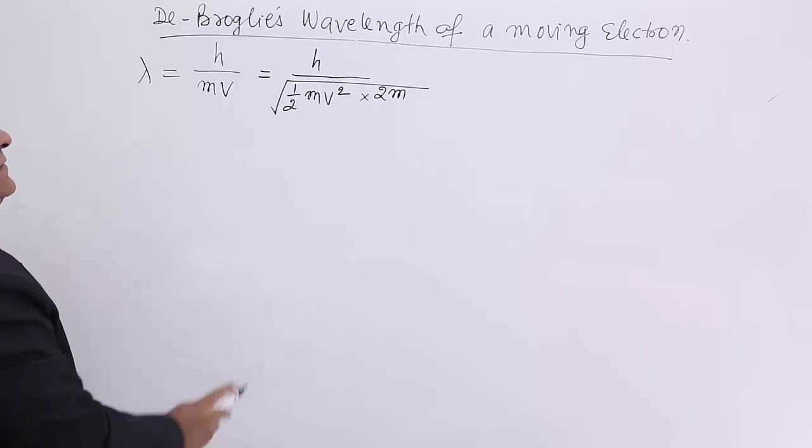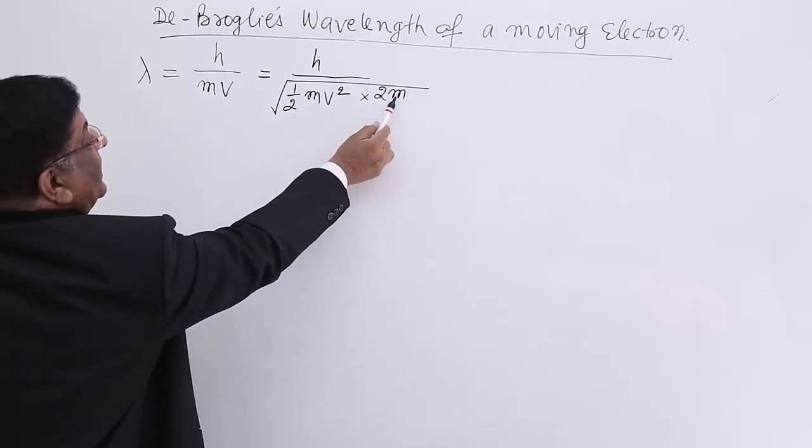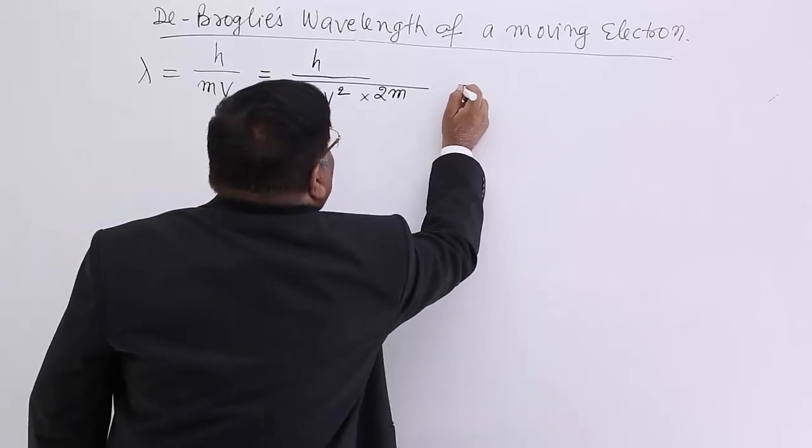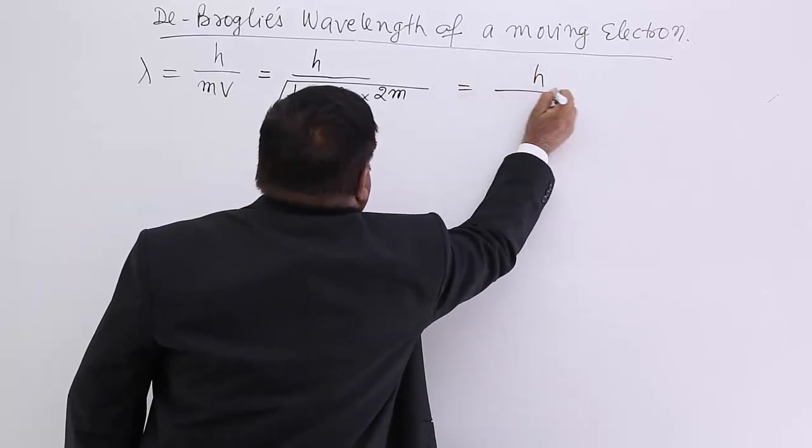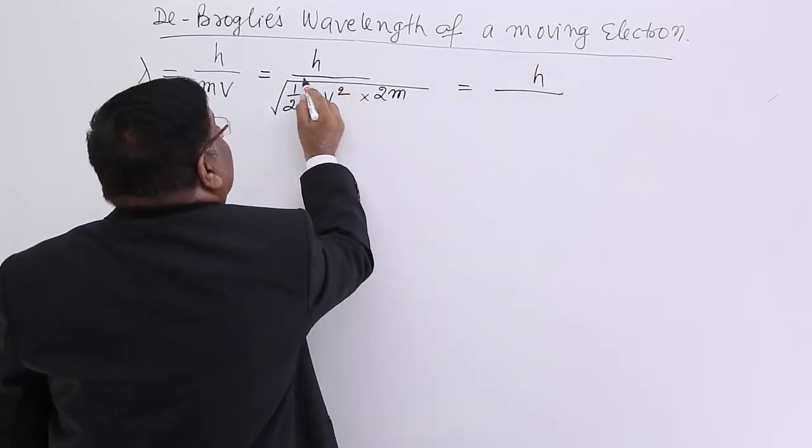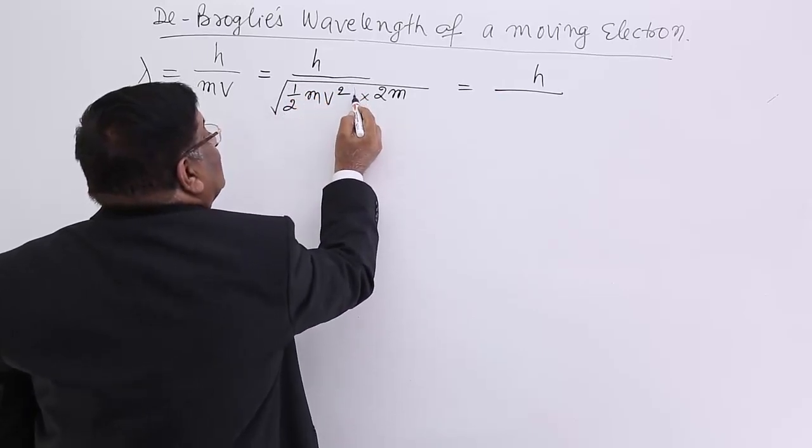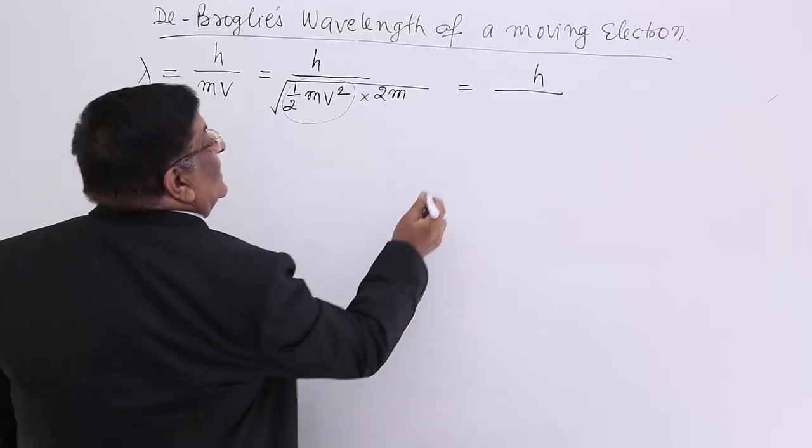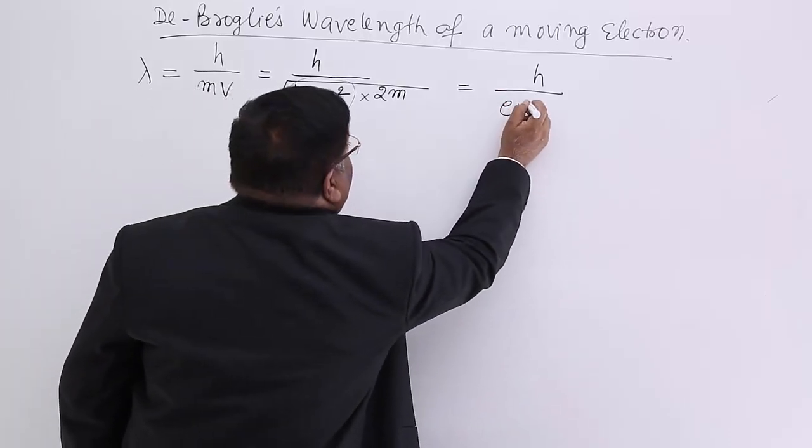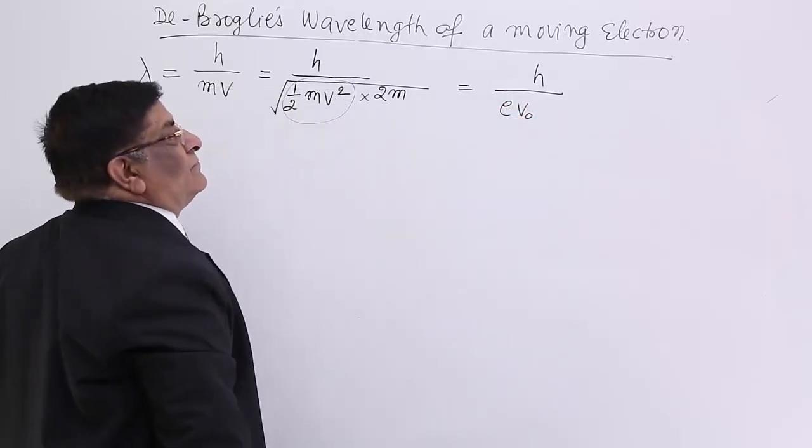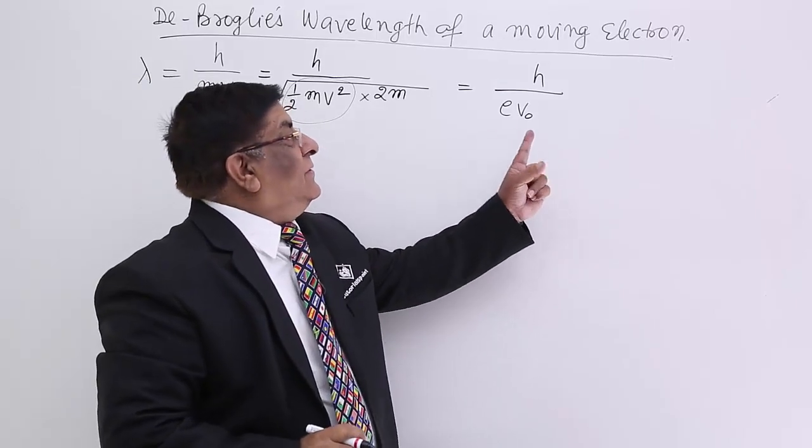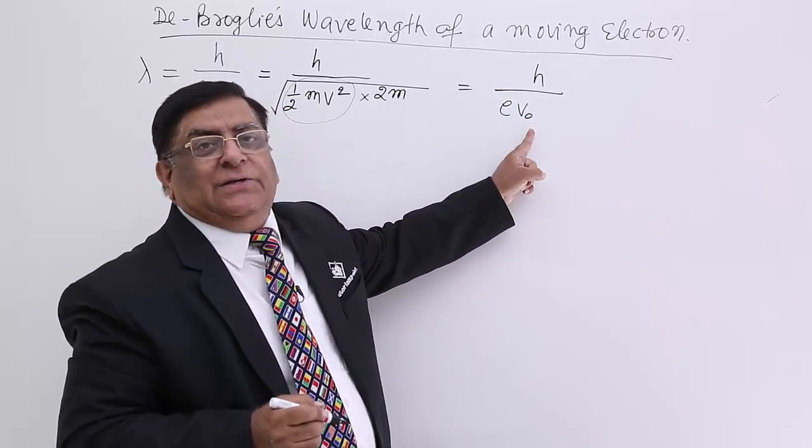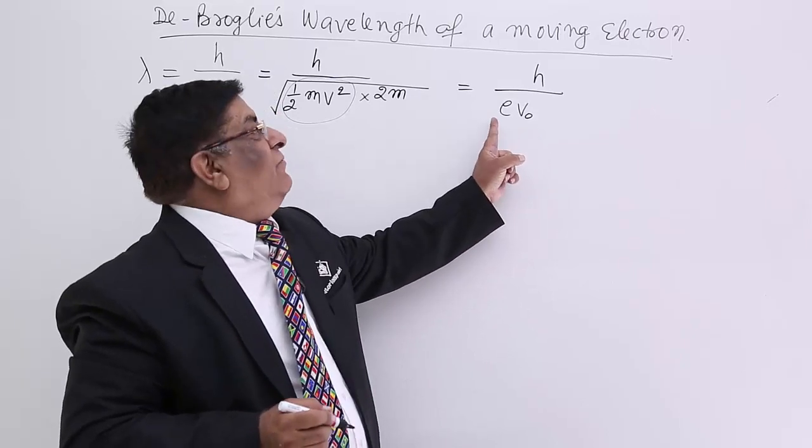Now, M²V² square root is MV. This is written as h/√(½mv²). This kinetic energy of the electron is equal to EV₀. If an electron is moving under potential difference V₀, then it has energy equal to EV₀.